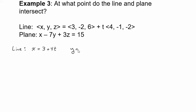My y value is going to be the second component negative 2 plus t times the second component, so that would be minus t. And my z value is 6 plus t times negative 2.